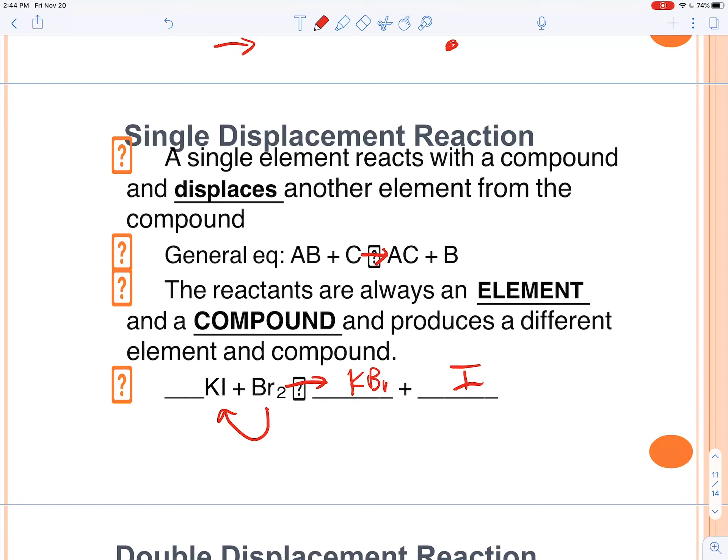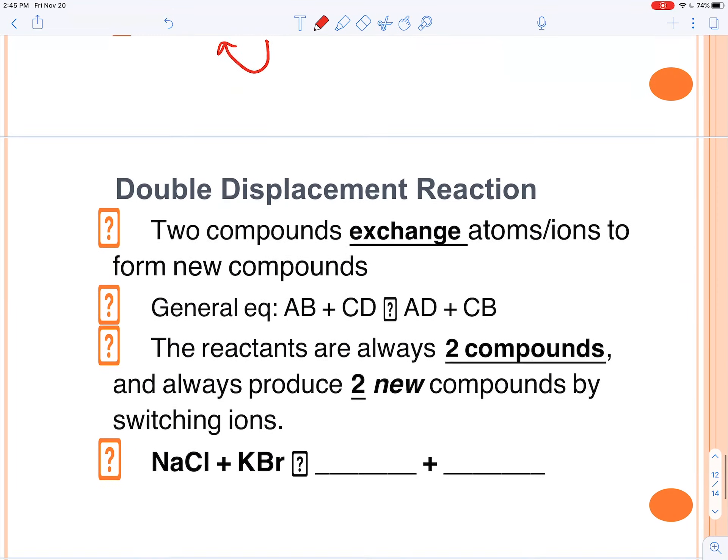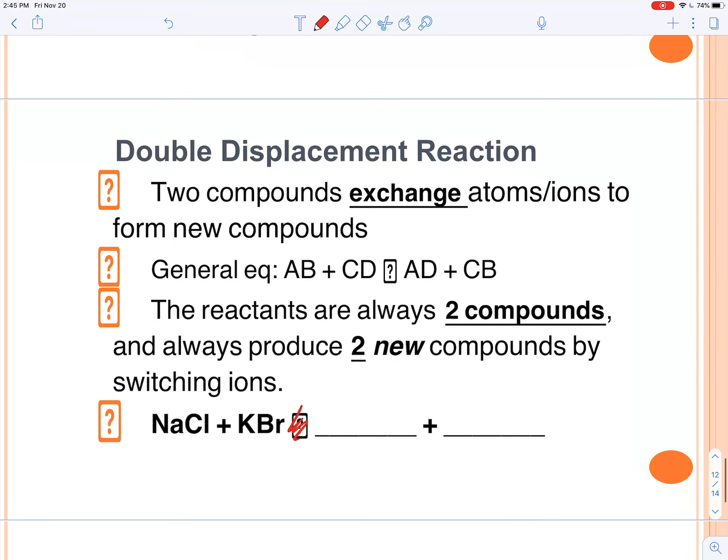And so remember, when the iodine gets kicked out, this is going to be KBr, we have to put a two here, because iodine doesn't like to exist by itself. It's one of those seven diatomic molecules. And then we want to balance this, so we're going to put a two here and a two here. So just be careful with that. Remember your seven diatomic molecules.